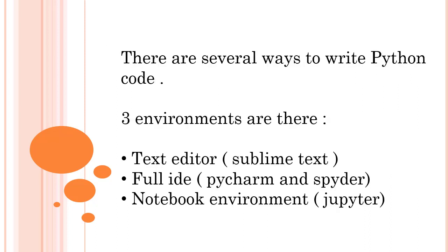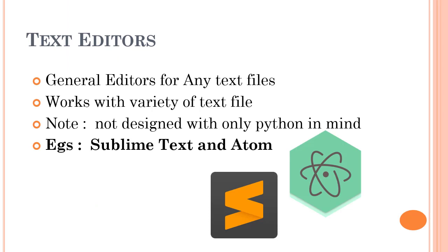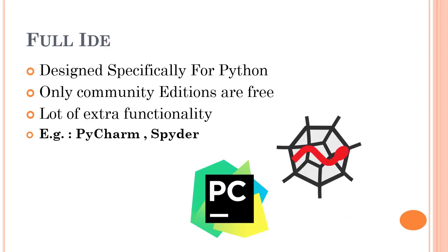There are three environments where you can write Python code: a text editor, a full IDE, and a notebook environment. Text editors — like Sublime Text or Atom — are general purpose and not specifically designed for Python. You can also write web development code there, so a lot of Python-specific functionality is missing. Moreover, to run Python from a text editor you save the file as .py and run it from the command line.